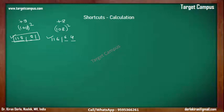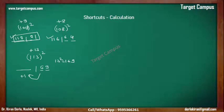Let's say 113 — square of 113. Now this is slightly more to think about. This is plus 13 from 100. The square of 13 is 169. We write only two digits here, so we write 69. The carry of 1 goes to the other part. 113 plus 13 is 126, plus 1 carry is 127. So the answer is 12769.